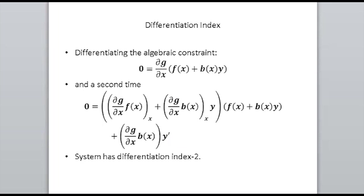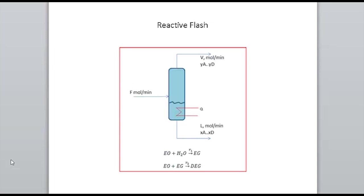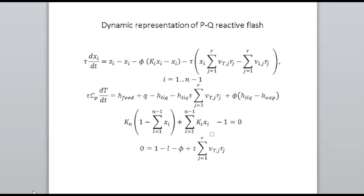To get out of the abstract and look at more familiar examples, the first one we'll look at is reactive flash. I'm going to show data originally presented by Rodriguez and Malone for an ethylene glycol reaction, and also a secondary reaction where ethylene oxide and ethylene glycol form diethylene glycol. The dynamic representation of this system, fixing the pressure and heat input of this reactive flash, gives us differential equations and a final equation — the vapor-liquid equilibrium relationships using simple K-values for the ratio of y over x.